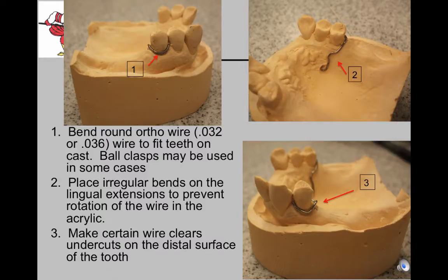Bend round ortho wire, 0.032 or 0.036, to fit the teeth on the cast with block out in place. The part of the wire that doesn't flex well must not get into the undercut or it can be a problem when seating the denture. Ball clasps may also be used when there is an embrasure area with an undercut and when the wire crossing the occlusal surfaces does not interfere with occlusion. Place irregular bends on lingual extensions to prevent rotation in the acrylic, and make certain the wire clears undercuts on the distal surfaces before applying acrylic.